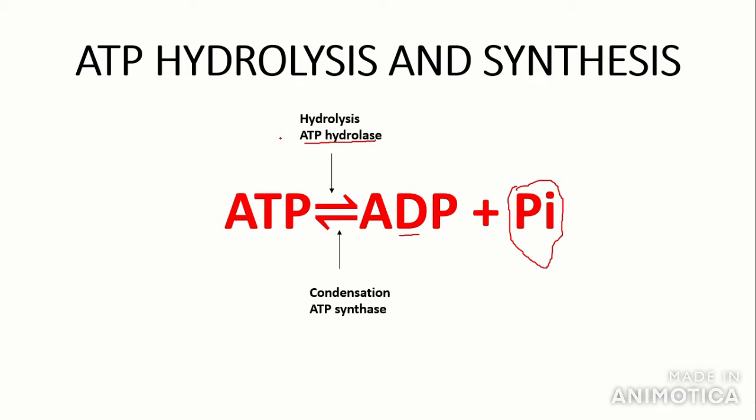Another crucial thing to remember — and this is a common theme throughout biology — is the phosphate group and its properties. This phosphate group can phosphorylate other compounds to make them more reactive, which is crucial in bodily reactions such as glycolysis. Again, you will learn more about this next year.